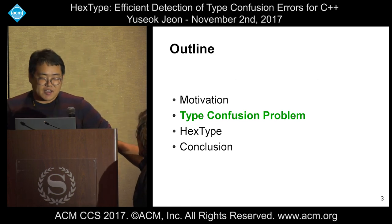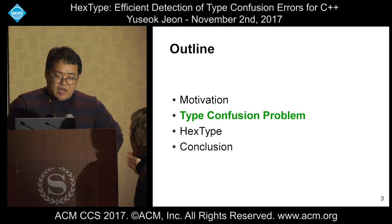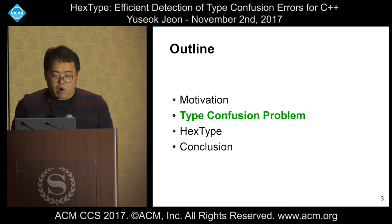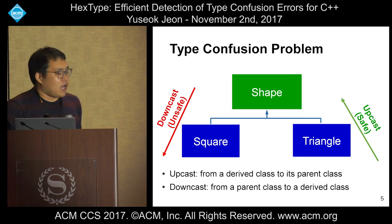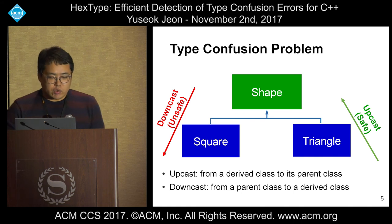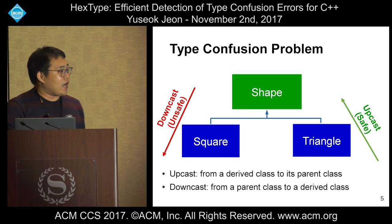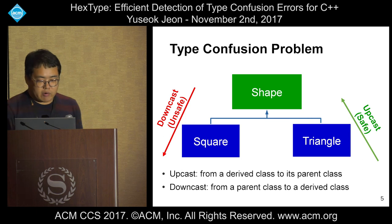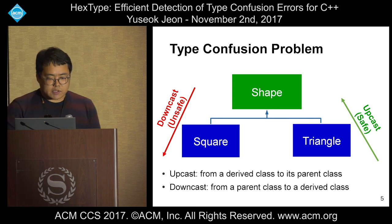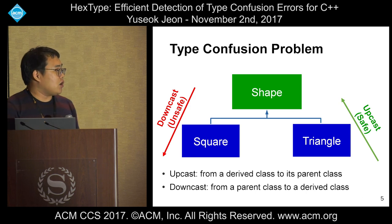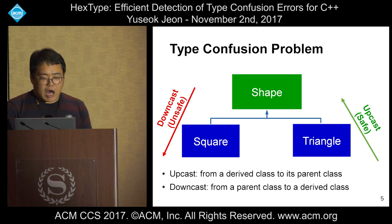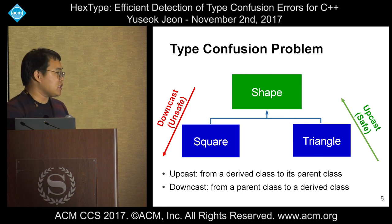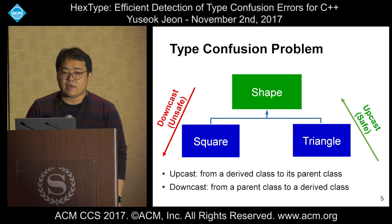Before going into detail, I'm going to introduce what the type confusion problem is. Let's assume there are three types: Shape as the parent, which has two child types — square and triangle. Type confusion problems occur during typecasting. Upcasting from a derived class to the parent class is always safe. However, downcasting from the parent class to a derived class might cause a problem.